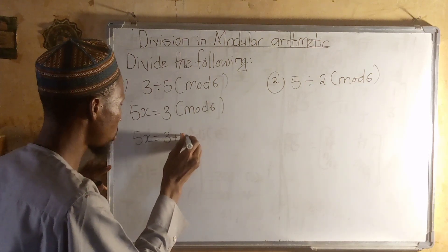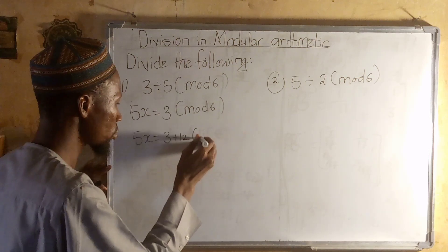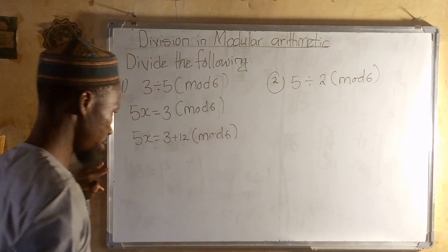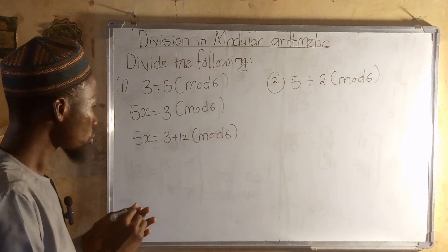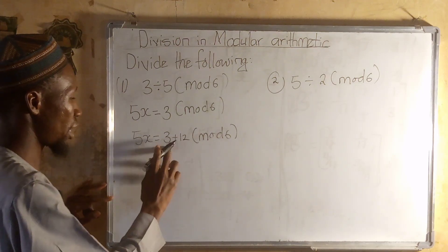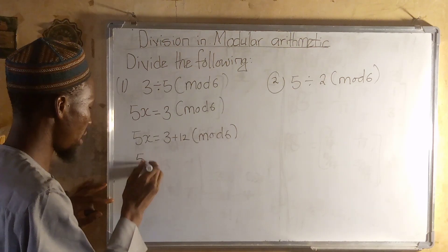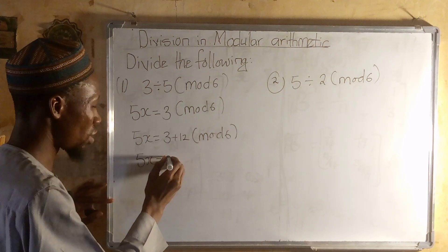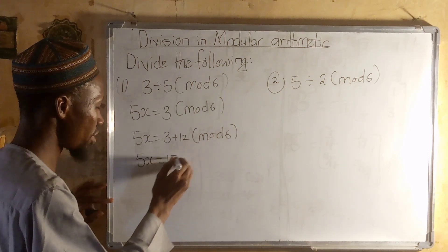5x equal to 3 plus 12 mod 6. So we have 5x equal to 15 mod 6.